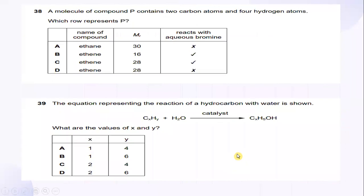And 38, a molecule of compound P contains two carbon atoms and four hydrogen atoms. So, which row represents P? So, the answer for this is ethene. And M is actually representing Mr value 28. We add with aqueous bromine. And this is a very easiest answer where you can get right.